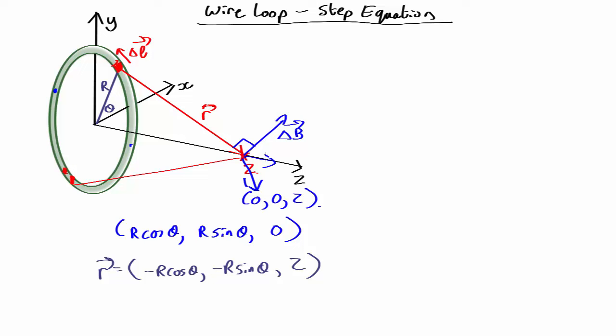So that's rather helpful. It means we don't have to calculate the x and y components, which have all these complicated cosines and sines in them. We just have to calculate the z component.